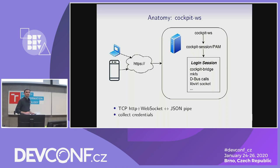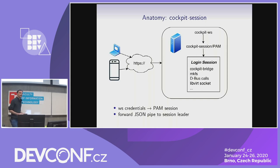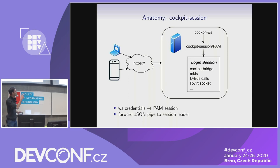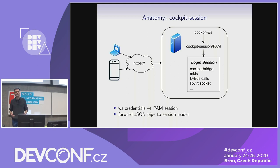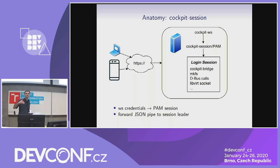This web server runs as an unprivileged system user, so by itself it cannot really do anything to the system. This is why we need a helper to actually start a session. Once we have credentials, we need to start a PAM session — you need root for that. Our standard component for this is called cockpit-session: a very small and auditable setuid root helper which collects the credentials the web server picked up, stuffs them into the PAM stack, and if all goes well, you have a Linux session. It then forwards the JSON pipe from the web server to the new session.